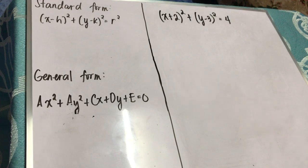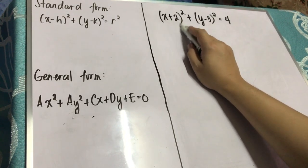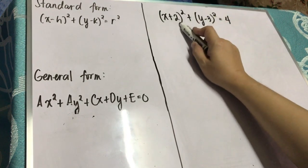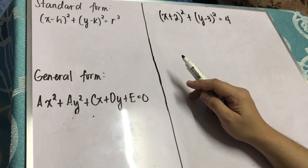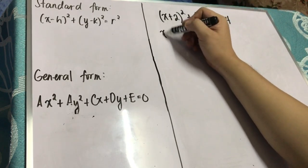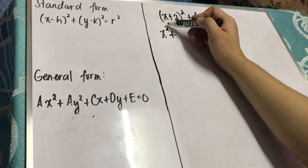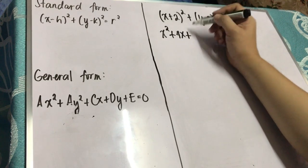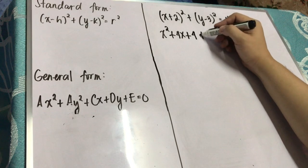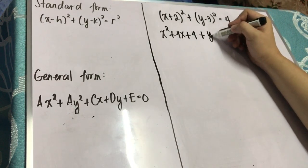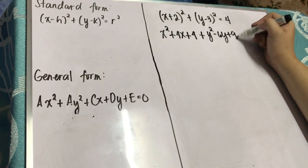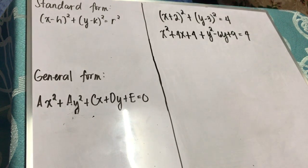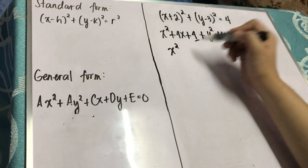The first thing we need to do is expand each expression. Applying the product of the square of a binomial, for the x group we have x squared plus 2 times x times 2 giving 4x, plus 4. For the y group, we have y squared, then negative 3 times y times 2 giving negative 6y, plus 9. So the expanded form is x squared plus 4x plus 4 plus y squared minus 6y plus 9, is equal to 4.